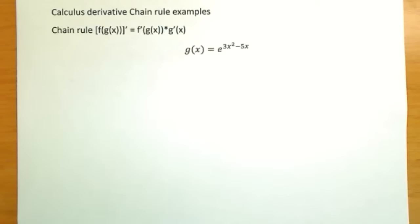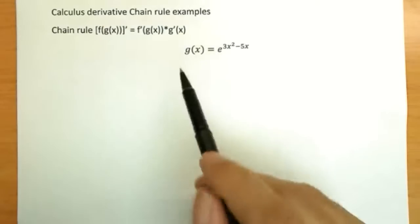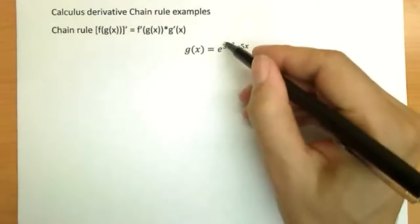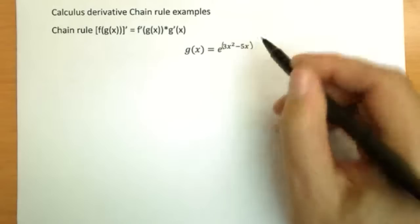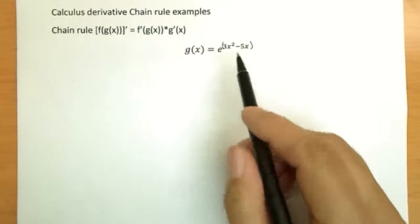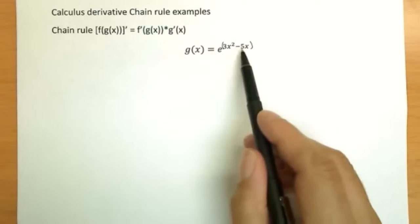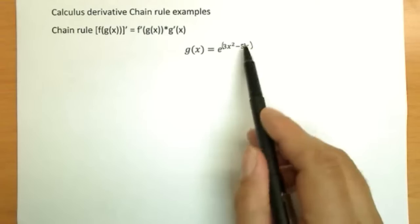Okay, so now we're going to do our second example of the chain rule. This time we have g of x equals e raised to—let's put a parenthesis around this, this is all in the power of e. So we have two functions: we have e raised to the something, and then the something is this function here.